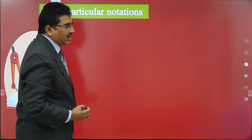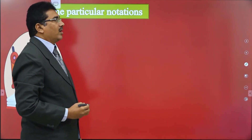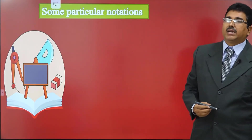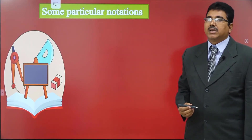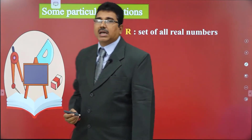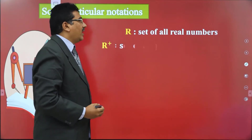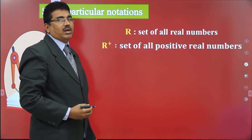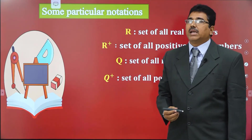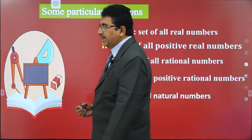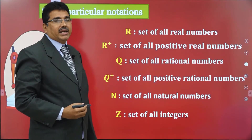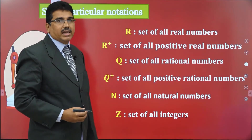Now some particular notations. For defining a function, certain sets and intervals are required related to the number system. Mainly: R denotes the set of all real numbers, R⁺ denotes the set of all positive real numbers, Q denotes the set of all rational numbers, Q⁺ denotes the set of all positive rational numbers, N denotes the set of all natural numbers, and Z denotes the set of all integers. This is the main number system used in functions.